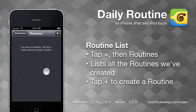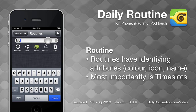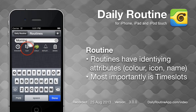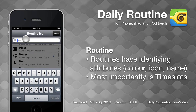Initially, our routine list is empty. Tap the plus button to create a routine, which we'll call Warning. Our routine has a color and an icon, both of which we can change.